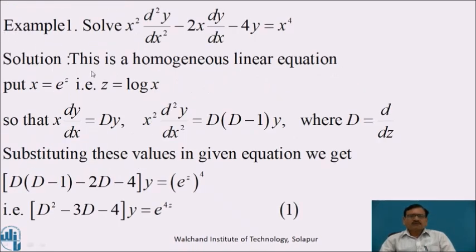Now we will solve the homogeneous differential equation: x²d²y/dx² - 2x dy/dx - 4y = x⁴. This is a Cauchy homogeneous linear equation. Using the substitutions x = e^z, z = log x, so that x dy/dx = Dy and x²d²y/dx² = D(D-1)y, substituting gives D(D-1) - 2D - 4 of y = e^(4z). Simplifying, we get (D² - 3D - 4)y = e^(4z).